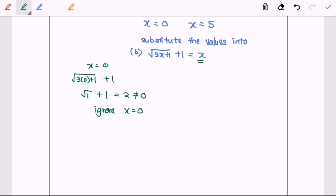Next, we have to substitute x equals 5. And from here, we can see that we have square root of 16 plus 1, and we will have 5. So if we substitute the value, it is equal to 5 as well. So meaning that the value x equals 5 is valid and it satisfies the equation.